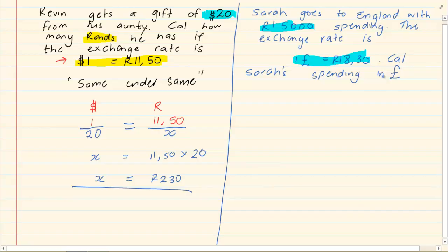Now again, same under same. The exchange rate we have is pounds and rands. Under pounds we have one and under rands we have eighteen thirty. Now she has fifteen thousand rand, that goes in line with the rands, and we don't know how much pounds is it equal to.